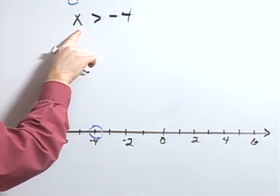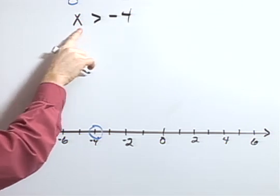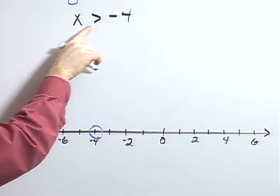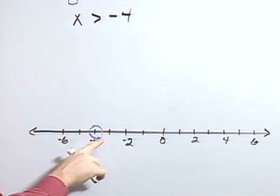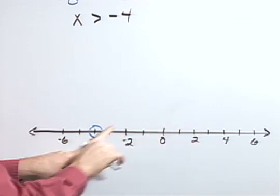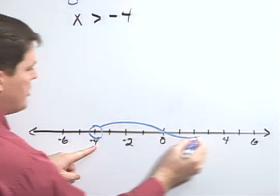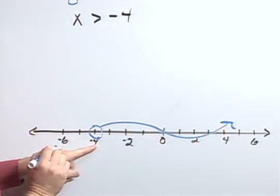The next thing I want to think about is, is x bigger or smaller than negative 4? Well, for my sign, I know x is bigger. So where on the number line is it larger? To the right. So I'm going to shade to the right.